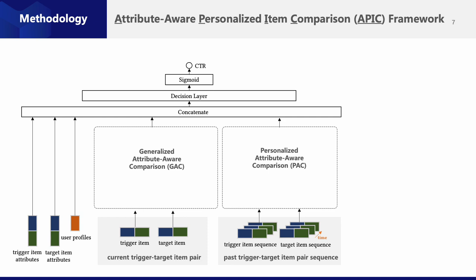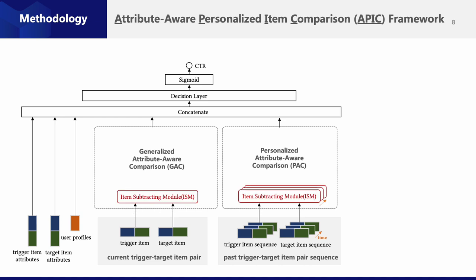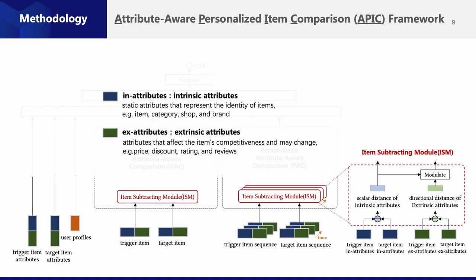The personalized attribute-aware comparison module works on the user's past triggered-target item pair sequences, which learns the user's personal preference from their past. Inside these two modules, an item-subtracting module works as a functional unit. Specifically, item attributes are divided into two classes: intrinsic attributes and extrinsic attributes. Given a pair of items, the scalar distance of intrinsic attributes is first calculated as the item similarity and then used to generate the modulation coefficient, which further acts on the scaling of the distance in extrinsic attributes.